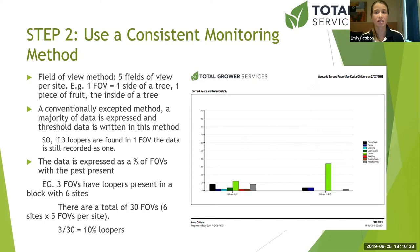A lot of pest scouting guides and resources put out by the government and others always express trigger points in fields of view. This gives you background on how to use those guides, which are pretty good for a lot of horticultural commodities. So if three loopers are found in one field of view, the recorder records one.